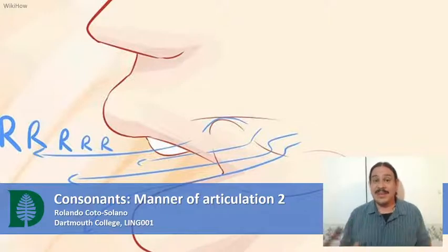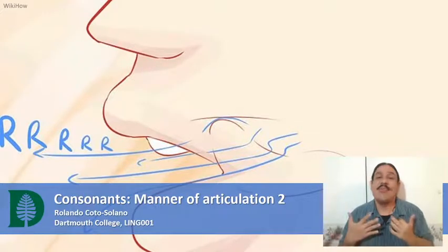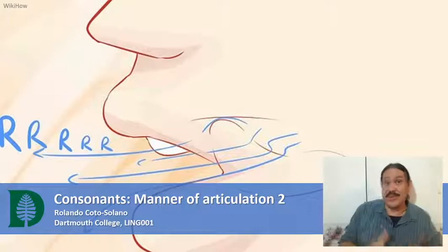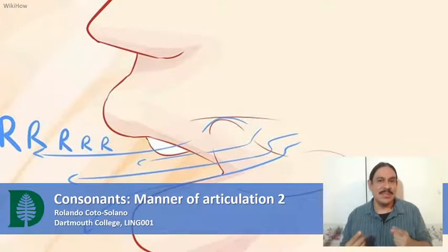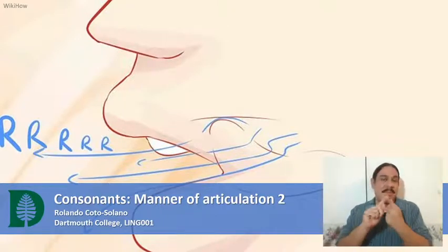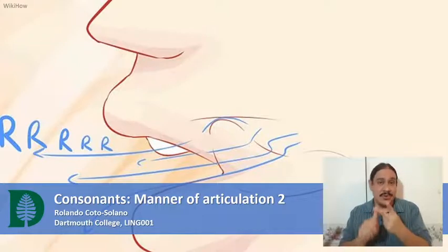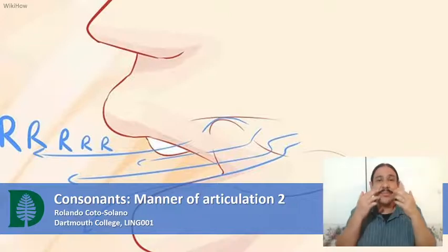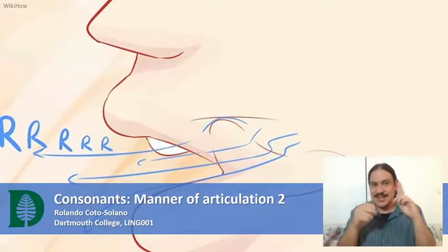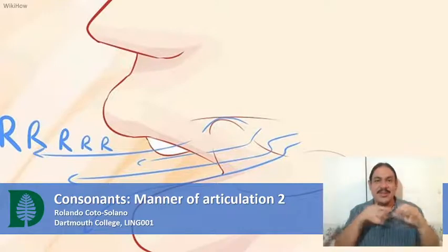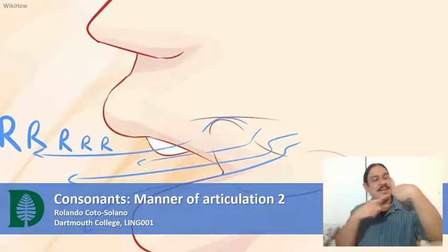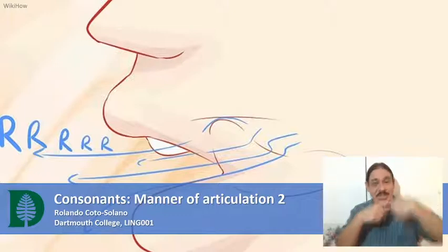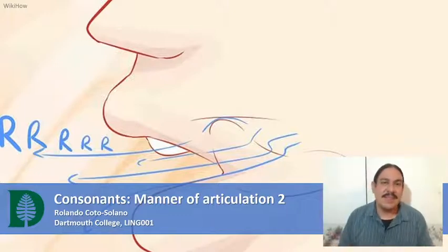In the last couple of videos we've been looking at consonants and at ways in which we can describe consonants. We've mostly looked at two ways: place of articulation and manner of articulation. A place of articulation is somewhere in your mouth where articulators are in contact — for example, your tongue with your teeth or the tip of your tongue with your alveolar ridge. That is a place of articulation and it is one way to describe a consonant.